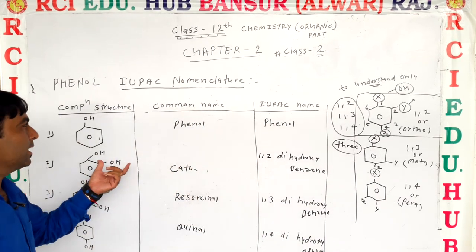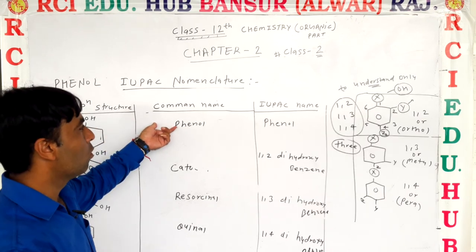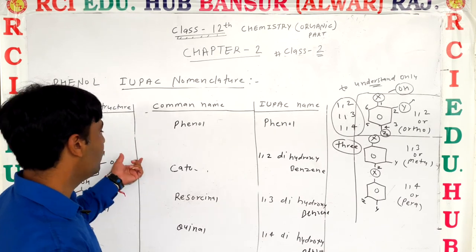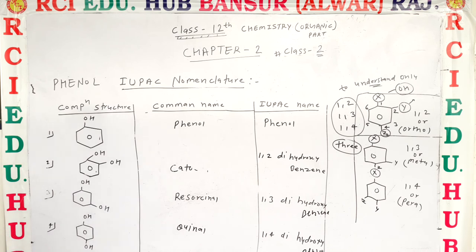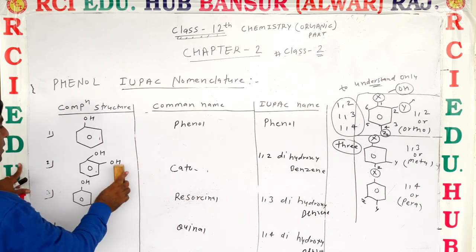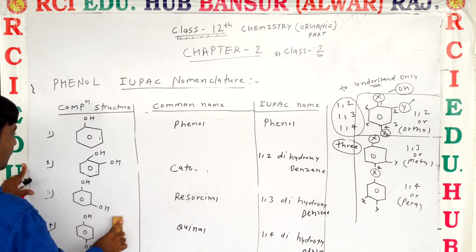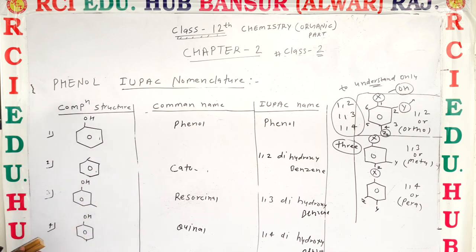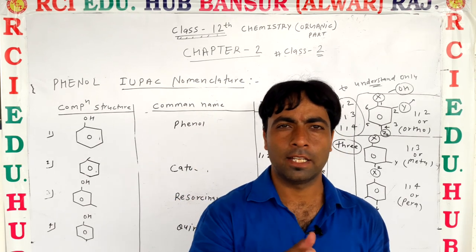That is mostly some basic examples according to common name and IUPAC name. Now we will see the next names of compounds on the basis of other substituents that may be different from the OH group — in the next class we will study about it. Thank you so much.